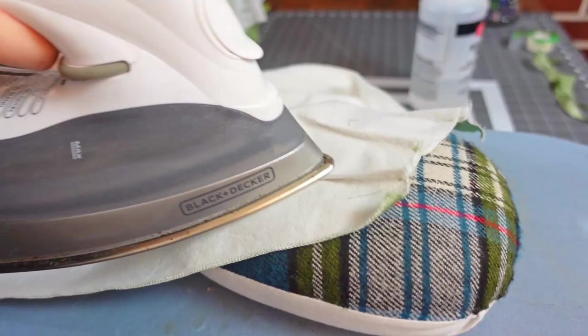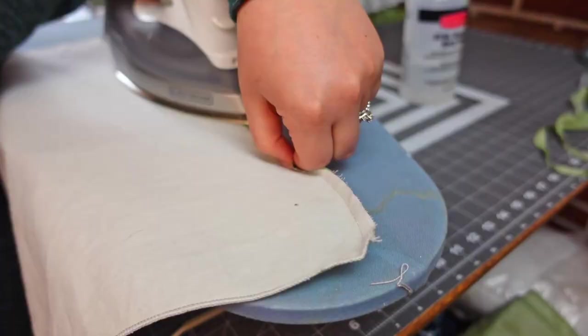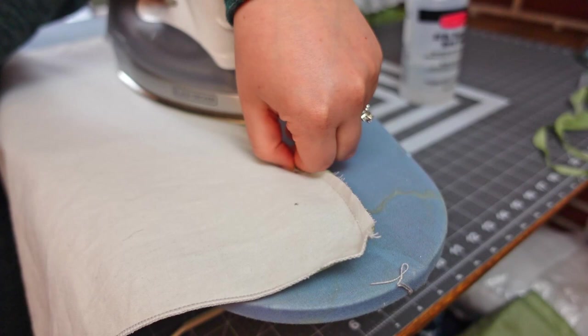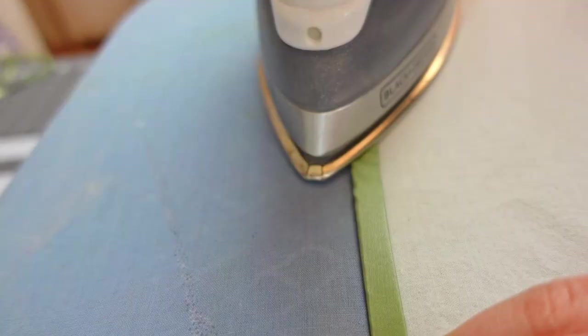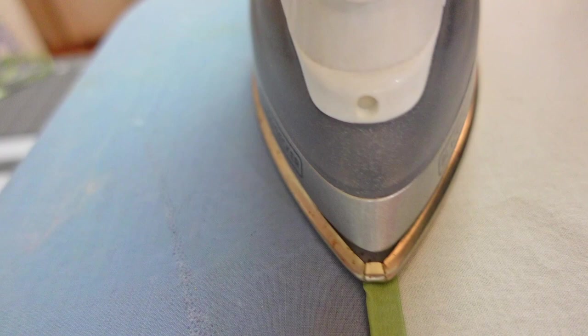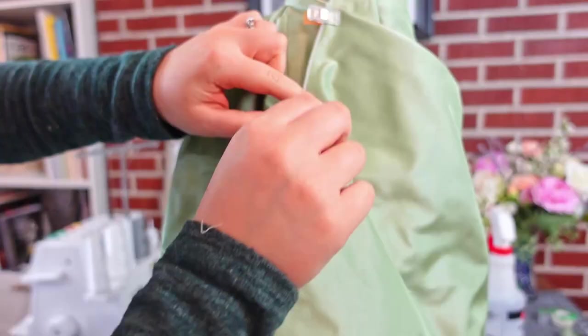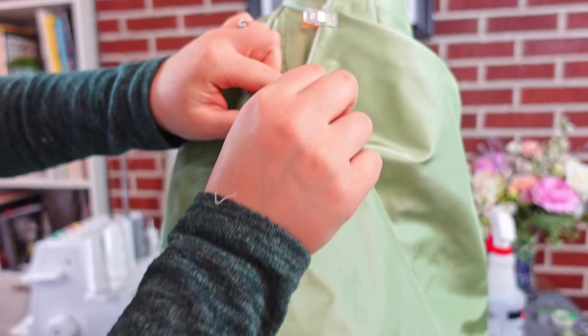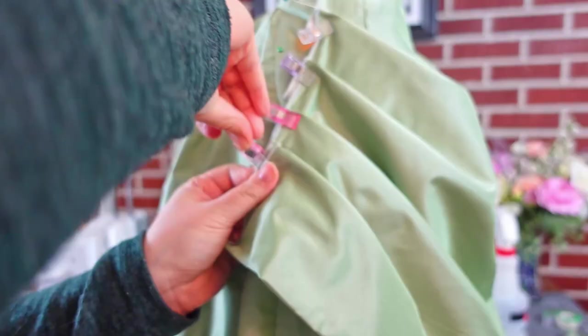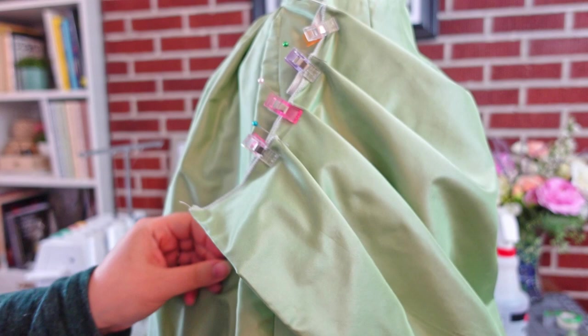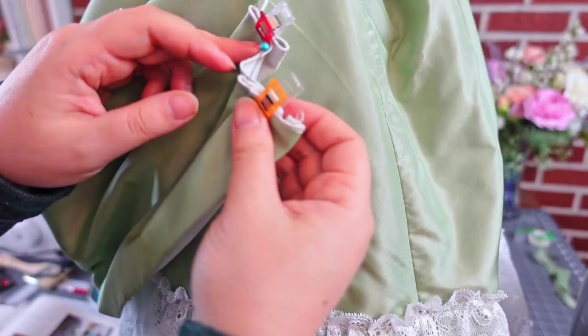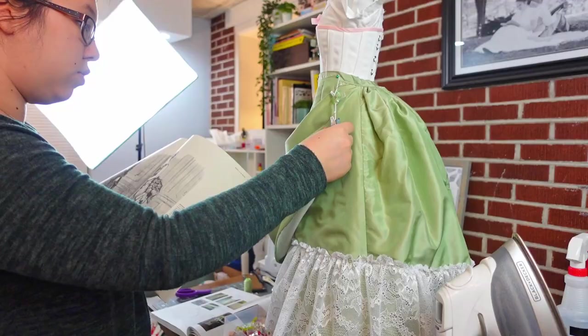After pressing the darts, I pressed up the hem of the apron and secured it by hand. Then I popped it back on my dress form so I could pleat up the sides. Overskirts are some of my favorite garments, which definitely helps contribute to why I love the bustle era so much.